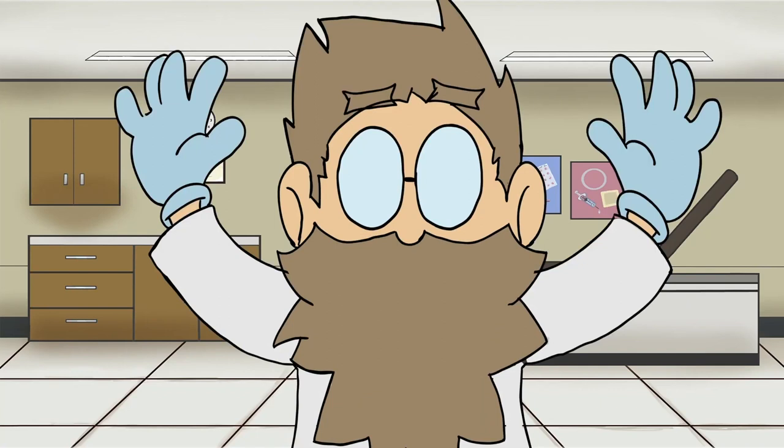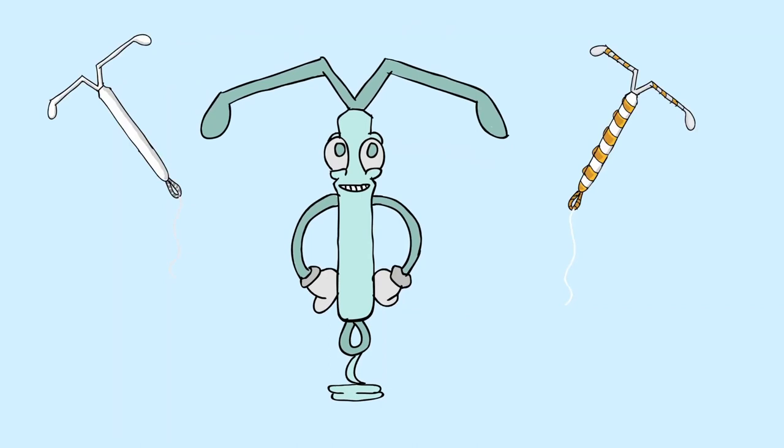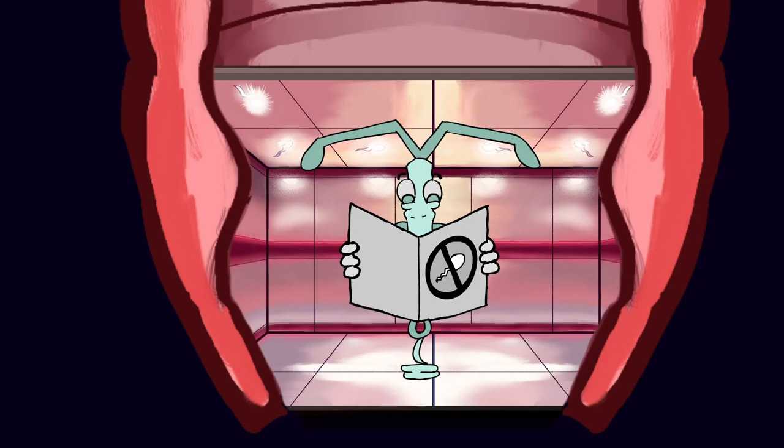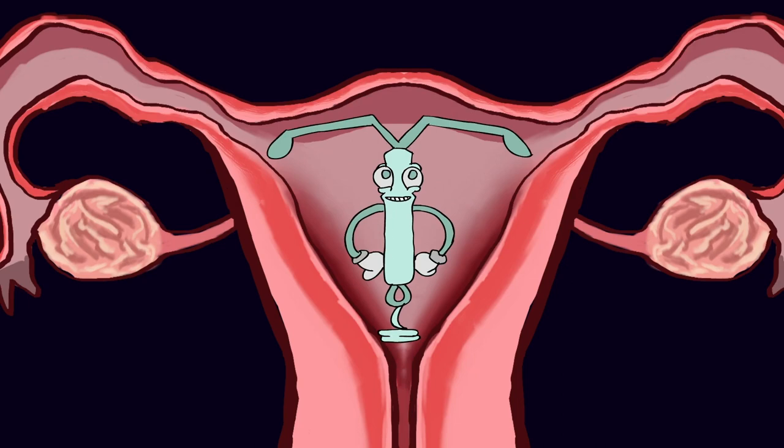The options keep coming! There are two types of long-acting reversible contraceptives: IUDs (intrauterine devices) and implants. IUDs are small T-shaped devices that can consist of plastic hormonal or copper non-hormonal options. They are inserted into the vagina and placed into the uterus. This device stops eggs from being released monthly and can last up to 3 to 12 years.